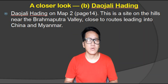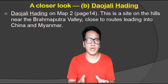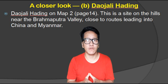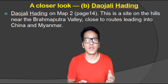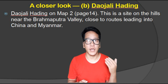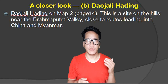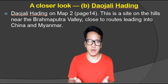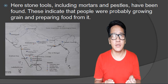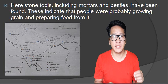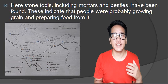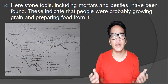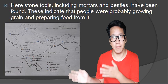A closer look — Daojali Hading. Find Daojali in your textbook; it is shown on page number 40. Daojali is a site on the hills near the Brahmaputra Valley, close to roads leading into China and Myanmar. Here, stone tools including mortars and pestles have been found. This indicates that people were probably growing grain and preparing food from it, as you can see on the map.